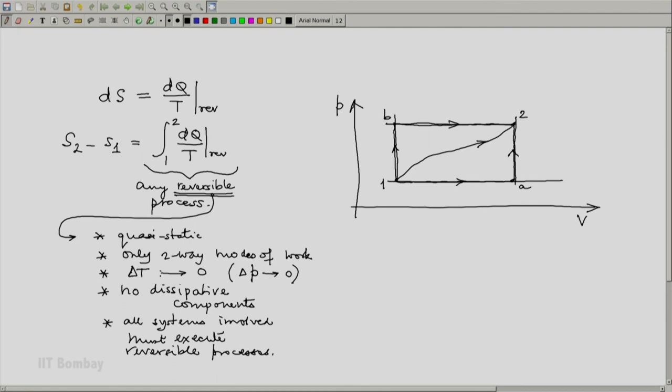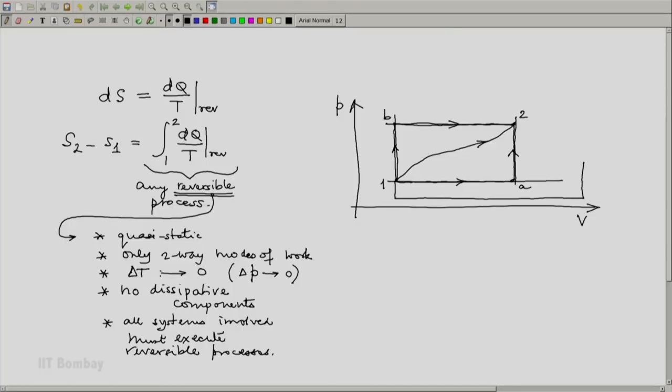The choice is ours. If we are very savvy at complex integration, select a path. Otherwise it is best to do by the least complex path. Nothing prevents you from taking a very scenic route like this. It is perfectly okay to do this, but it is only more cumbersome to evaluate this.